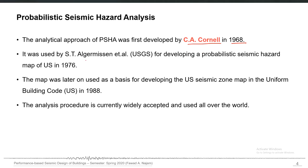It was used by Algermission for developing seismic hazard maps for the U.S. in 1976. Based on those hazard assessment results, the U.S. seismic zone map was developed and was included in the Uniform Building Code in 1988. Since then, this methodology is widely used all over the world to perform seismic hazard assessment and develop seismic hazard maps for any particular area or site.